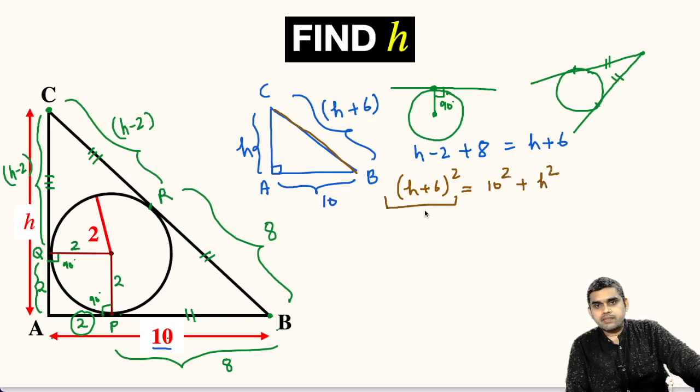Let us expand this bracket. This will be H square plus 12H plus 36 equals 100 plus H square.